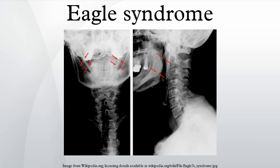Visualizing the styloid process on a CT scan with 3D reconstruction is the suggested imaging technique. The enlarged styloid may also be visible on an orthopantogram or a lateral soft tissue X-ray of the neck. It is worth noting that the styloid may be enlarged in 4% of the population, and only a small minority of people with enlarged styloids have symptoms.